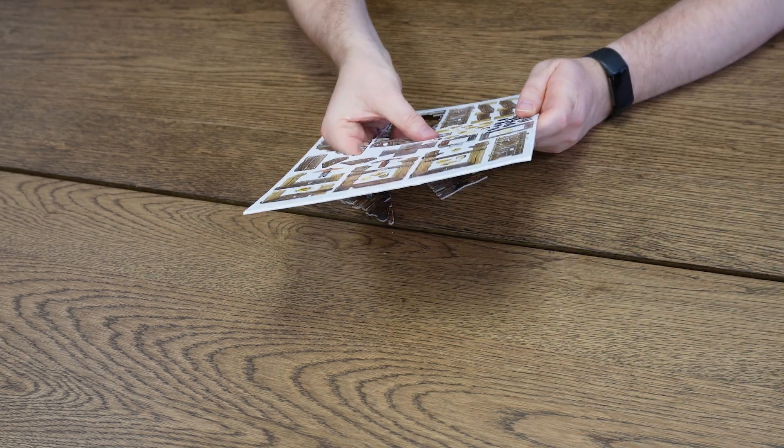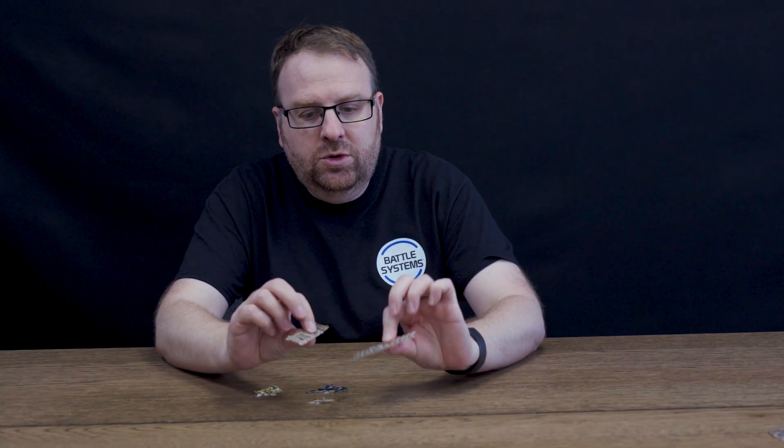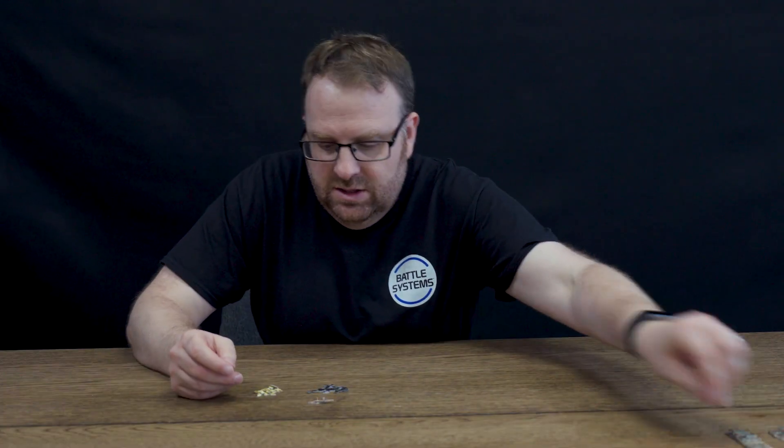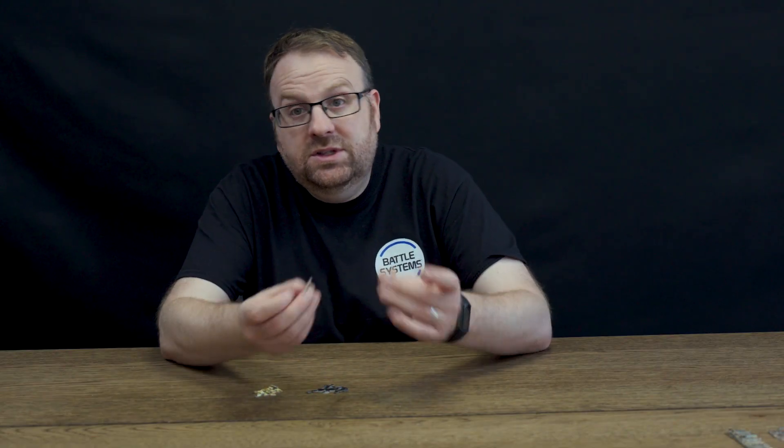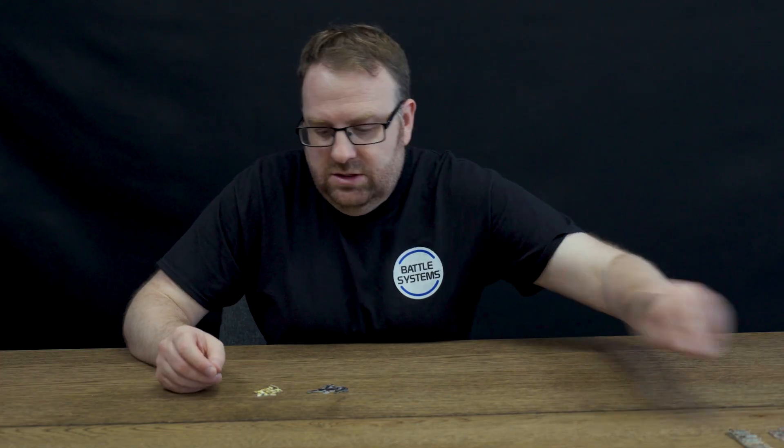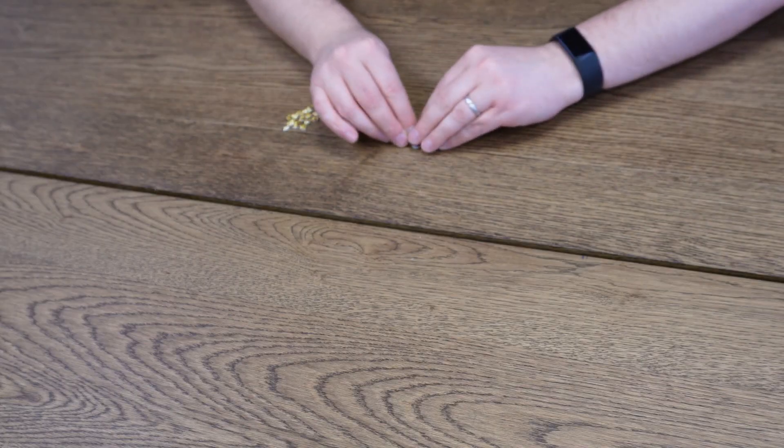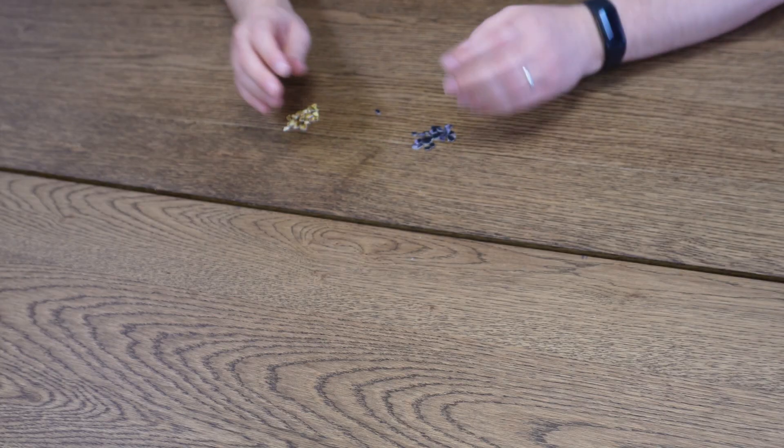The simplest parts on this sheet are some ladders which you can obviously prop up wherever you like against the wall or across a gap or whatever you want to do with those. You've got some tools that you can use as scatter and you've got some ore, either coal or gold. And that can obviously fill up your minecarts or act as an objective for an adventure or a quest.